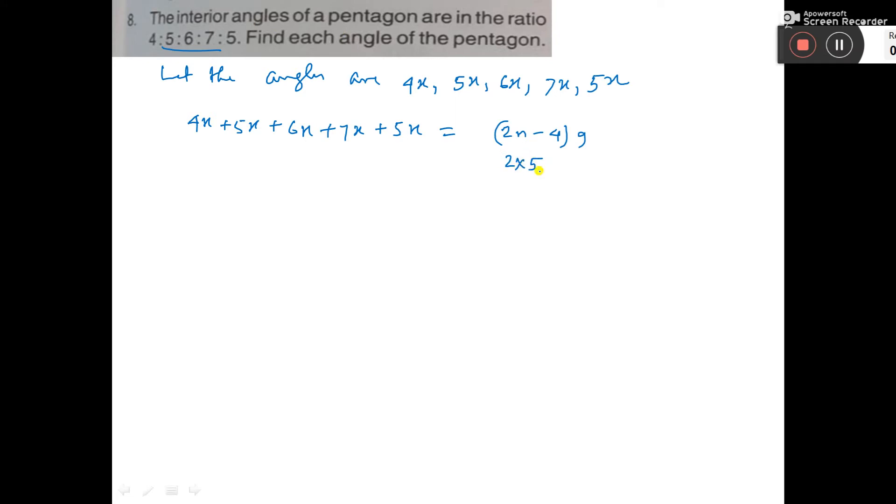The value of n will be 5. So here it is (2 × 5 - 4) = 6 × 90 = 540.